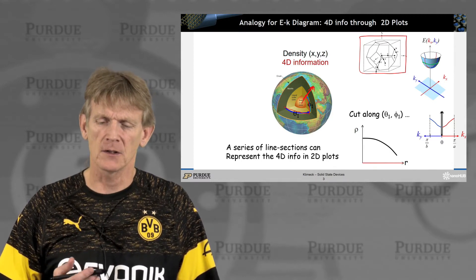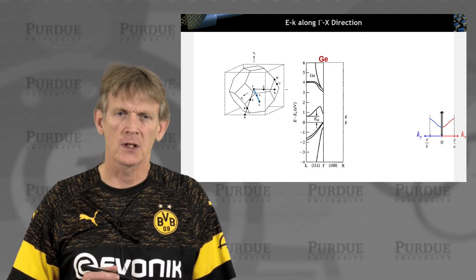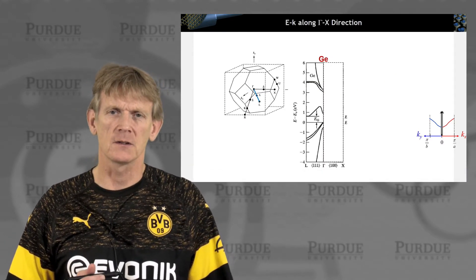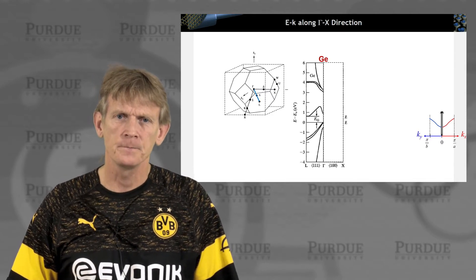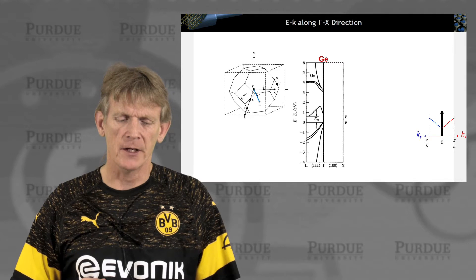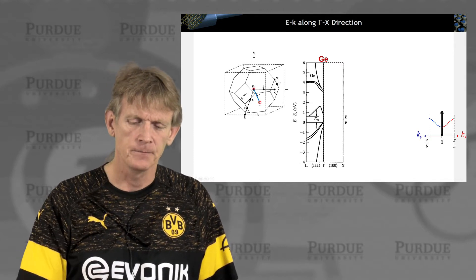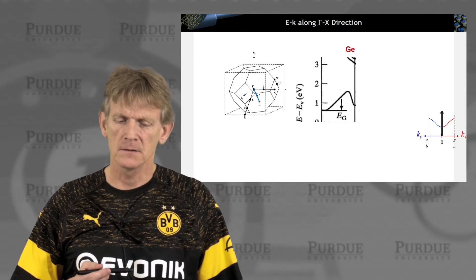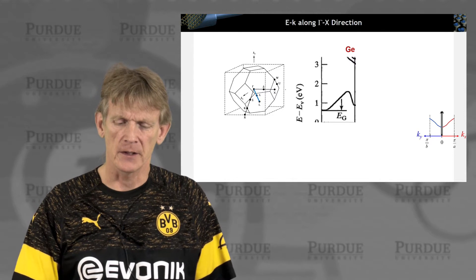So in crystals and semiconductor devices, we utilize these Brillouin zones to cut information in certain crystal directions. So we're going to do this here for germanium, and we're going to look first in the direction gamma to L, as indicated here by this line, and we're going to look at the E-k diagram of germanium in that crystal direction.